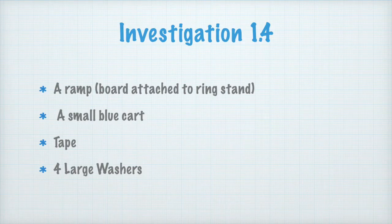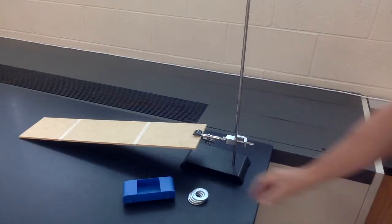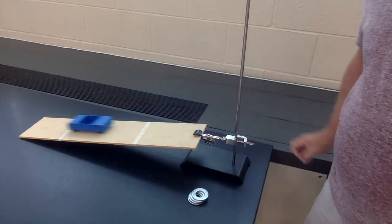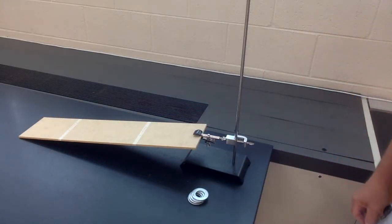Investigation 1.4 asks you to build a small ramp and roll a cart down it from two positions marked with tape on them, and then repeat that process with some washers inside the cart.